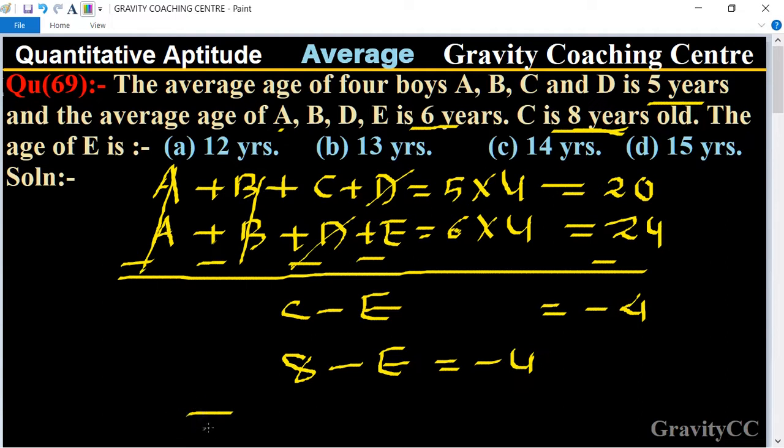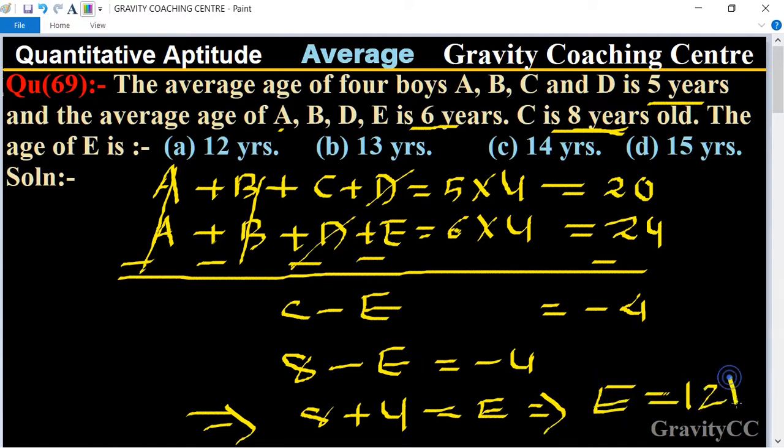So implies that eight plus four equal to E, so implies that E equal to twelve years, which is the required answer. So option A is the correct answer.